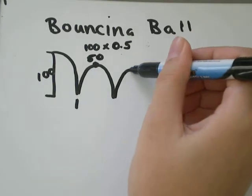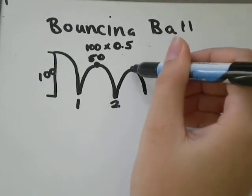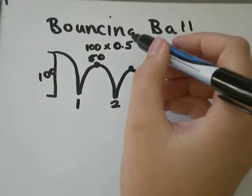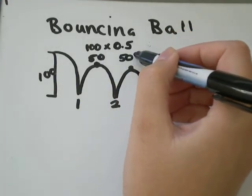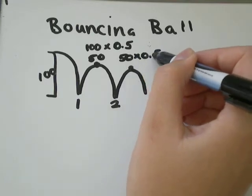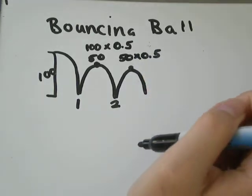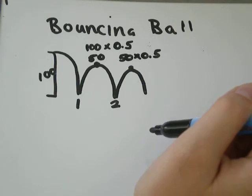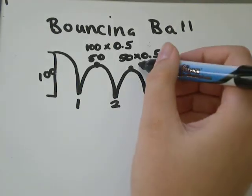So our ball bounces again. So after 2 bounces, it's got a height up here, which is now its previous height, 50 cm, times 50% of that height, times 0.5. 50 times 0.5 would be 25 cm.